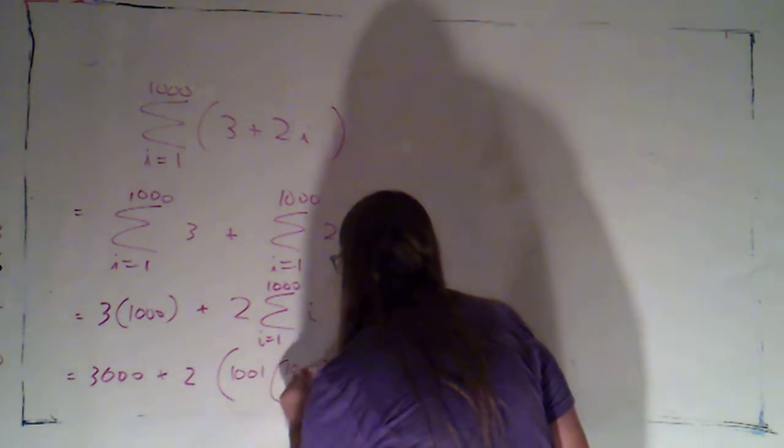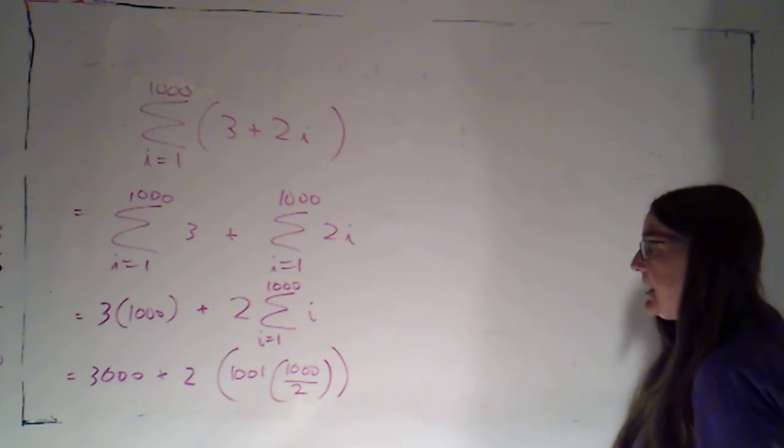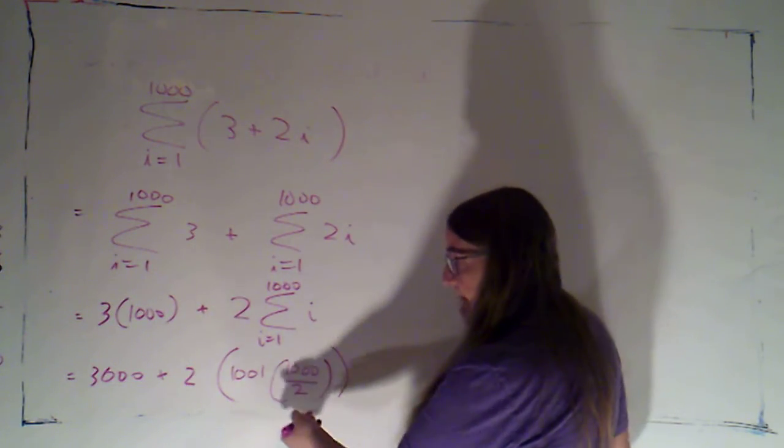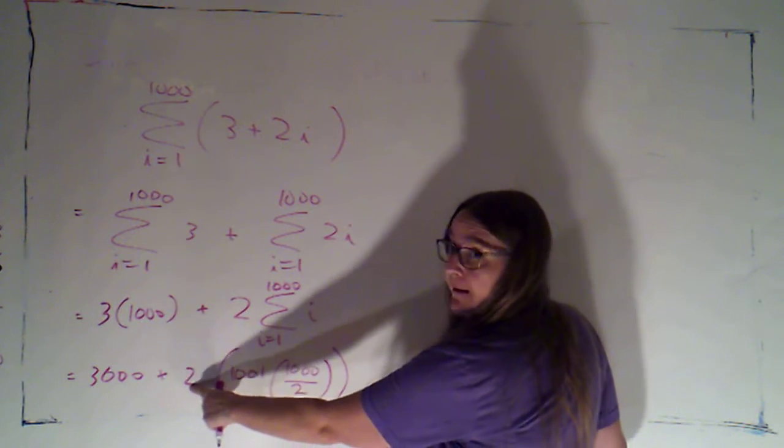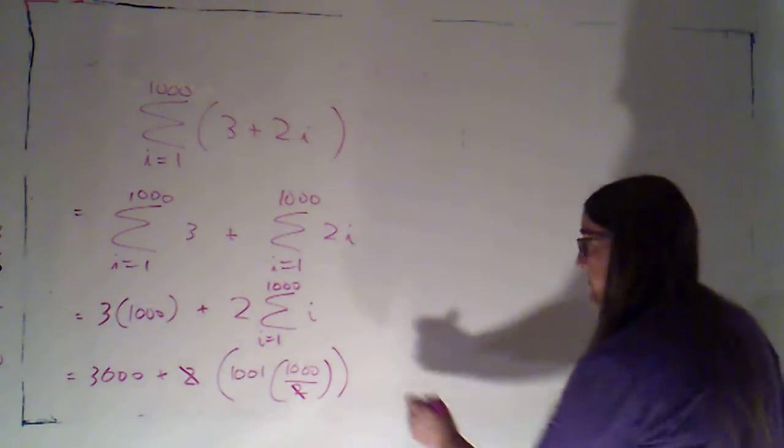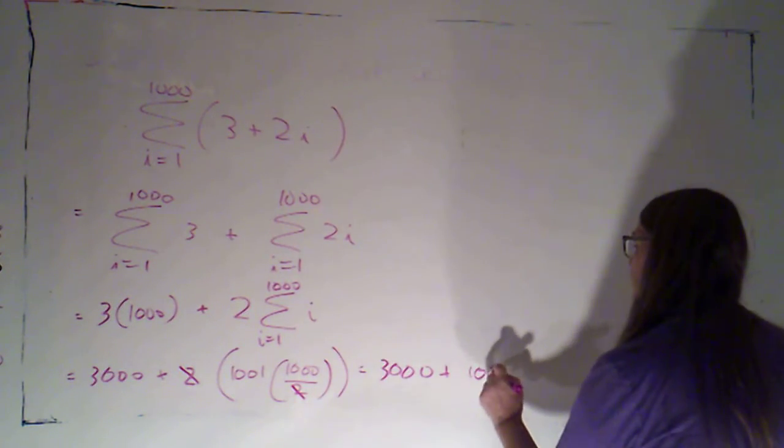Well, if there are a thousand numbers, there will be half as many pairs. Now, I could say a thousand divided by two is five hundred and then multiply. I'm noticing that I'm going to multiply this whole thing by two eventually.